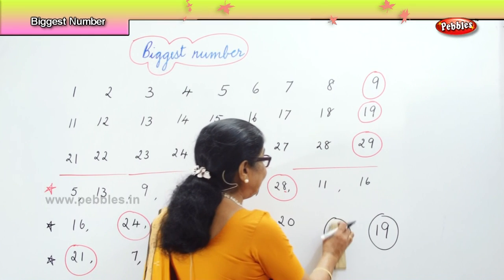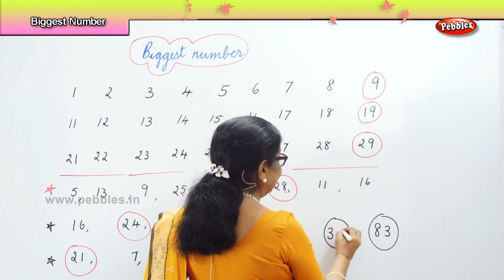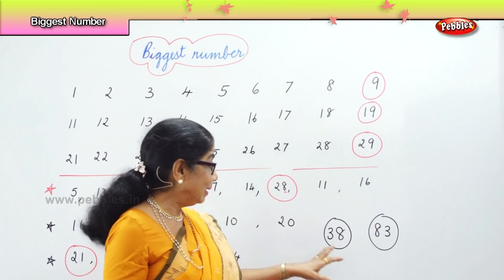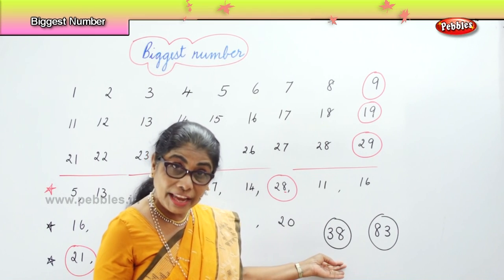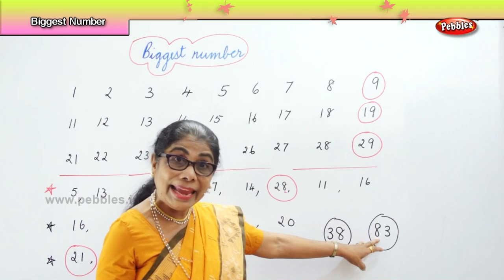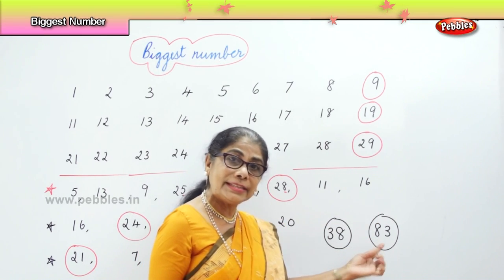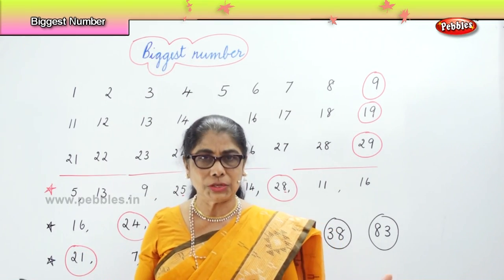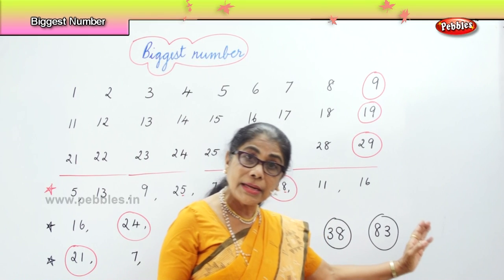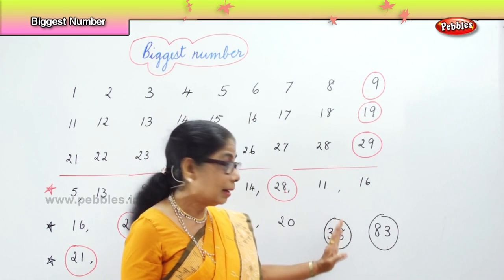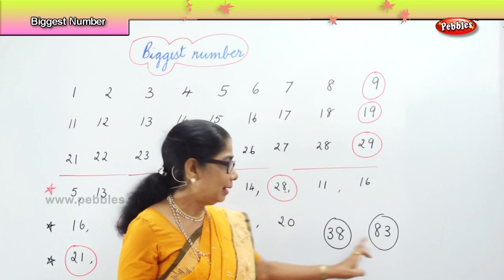Now this is all number play. I have eighty-three and thirty-eight. We have two same digits: three and eight, three and eight — thirty-eight has three and eight, eighty-three has eight and three. Which is bigger? Eighty-three. We are looking at the first number. When looking for the biggest, look at the first number for all the numbers given. The first number should be big — eighty is definitely bigger than thirty-eight.